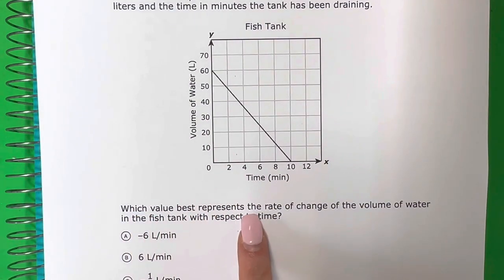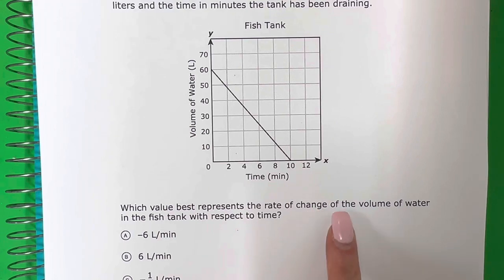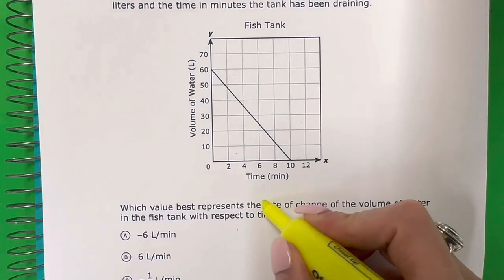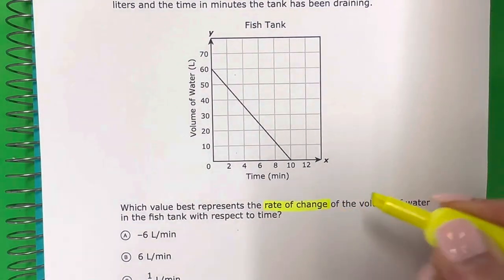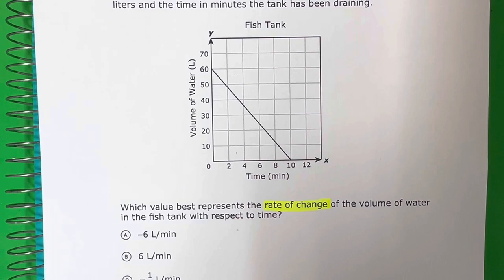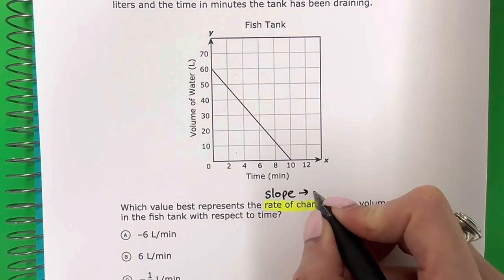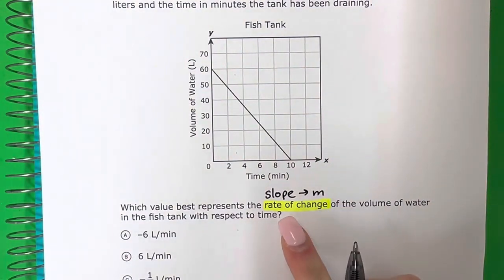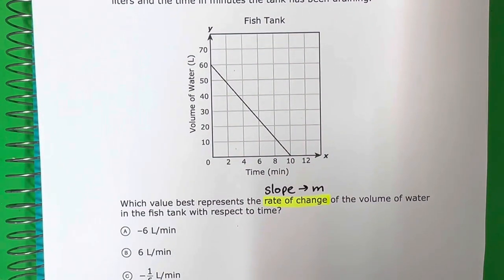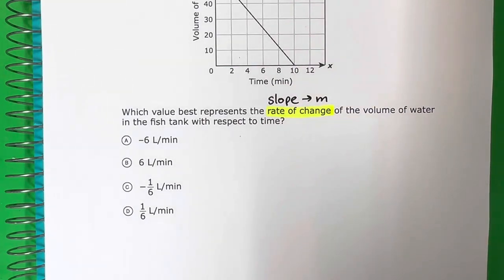Which value best represents the rate of change of the volume of water in the fish tank with respect to time? So what is important here? Rate of change. That is all that you really need to understand for this question. What is rate of change? Rate of change is the slope and the letter for that is M. So you need to remember that rate of change is slope and there is a formula for that.